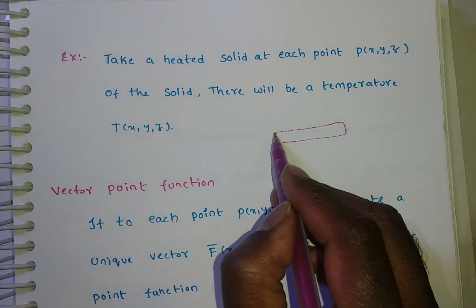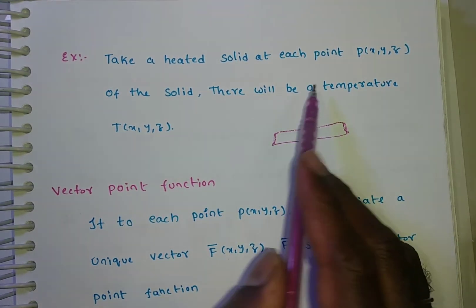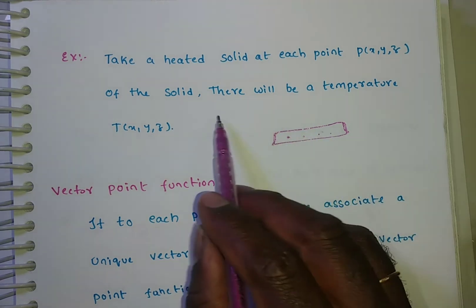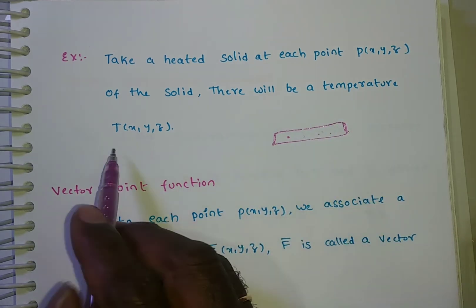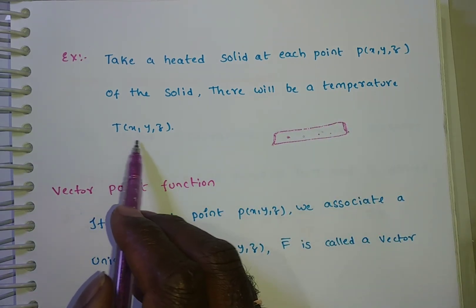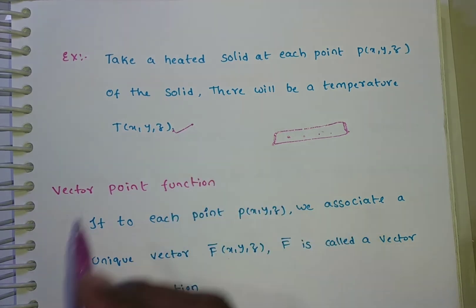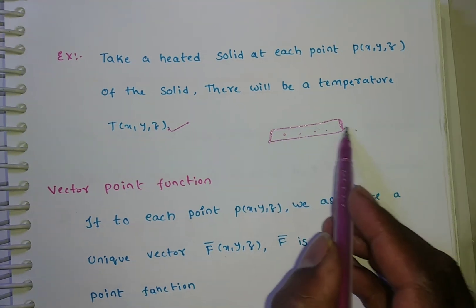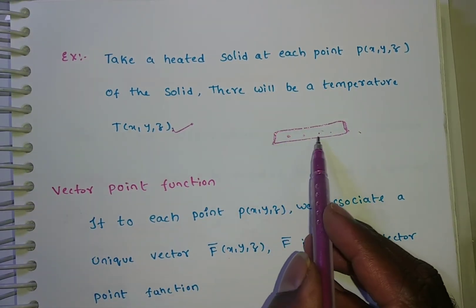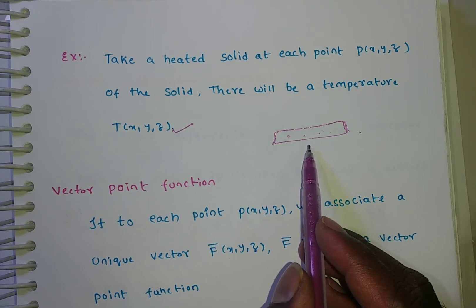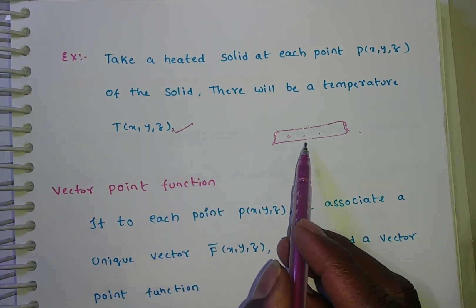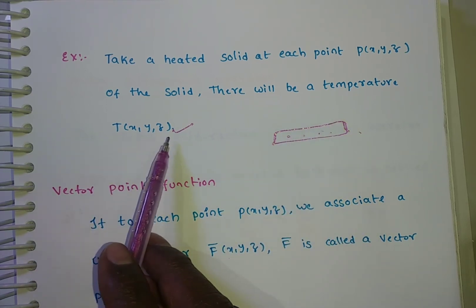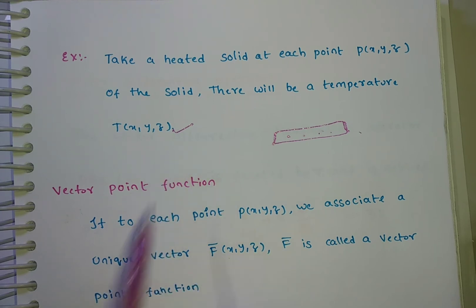Take a heated solid. At each point of the solid, there will be a temperature. The temperature is denoted with phi of x, y, or t of x, y, z. So this is an example for the scalar point function. At each point there will exist one function having some temperature. The temperature we are denoting with t of x, y, z. This is an example for the scalar point function.